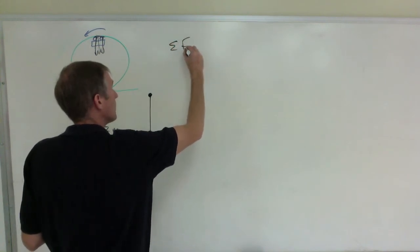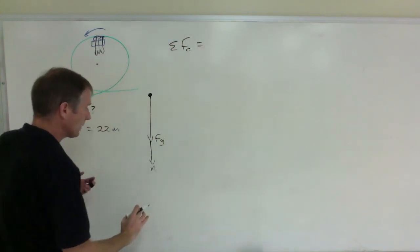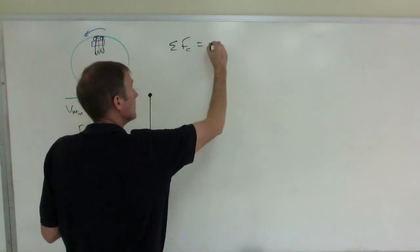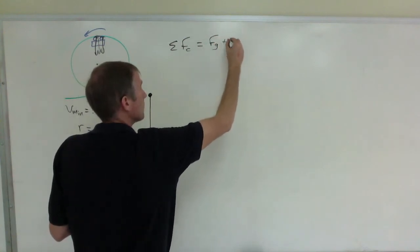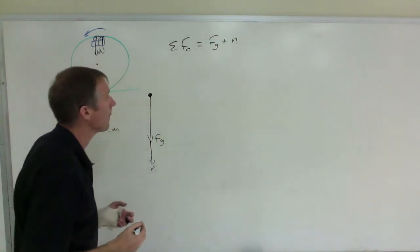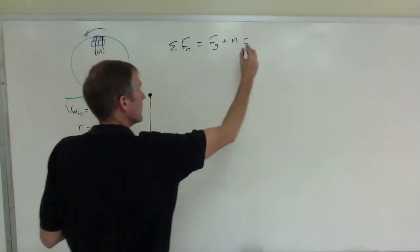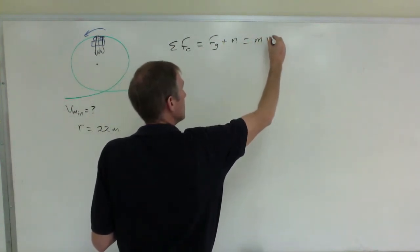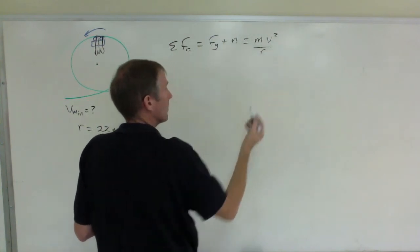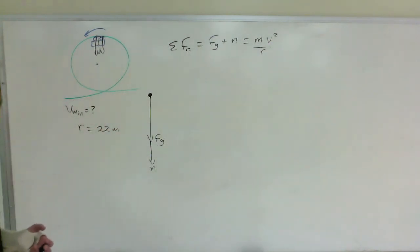So your net centripetal force is the sum of everything pointed down. There are two of them. The weight plus the normal force. And that is going to equal, of course, centripetal force is mv squared all over r. Right? m times ac.